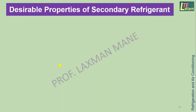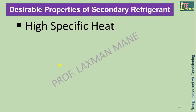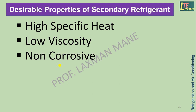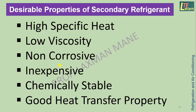Desirable properties of Secondary Refrigerant include: high specific heat, low viscosity, non-corrosive nature, inexpensive cost, chemical stability, and good heat transfer properties. Secondary refrigerants such as ethylene glycol and brine solutions are commonly used.